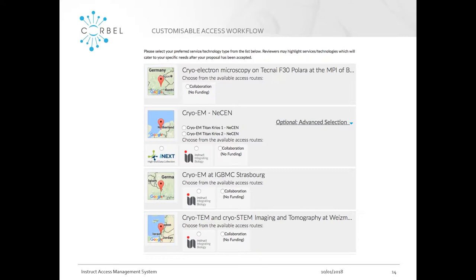This screenshot shows part of the catalogue available to users. Users can get a list of technology types offered by a particular funding route and then see which centres specifically offer that technology — here you can see centres that offer Cryo-EM. In some cases you can even pick which machines you'd like to use at a centre. There are also multi-access platforms available, where you can see multiple funding routes: you might be funded by iNEXT, by Instruct, or go for a collaboration approach.